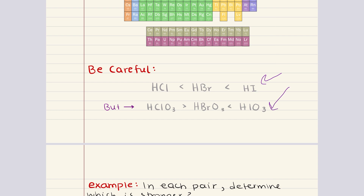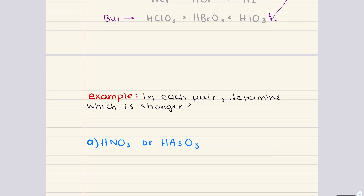To sum up, the strength of an acid or base is deeply connected to its molecular structure. For binary acids, the trends on the periodic table help explain why certain acids are stronger than others. For oxyacids, both the number of oxygen atoms and the electronegativity of the central atom play a very important role in determining acid strength. By understanding these structural factors, we can predict and explain the behavior of acids and bases in a wide range of chemical reactions. With that, let's hop into a quick practice problem.